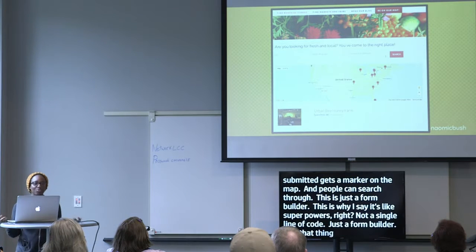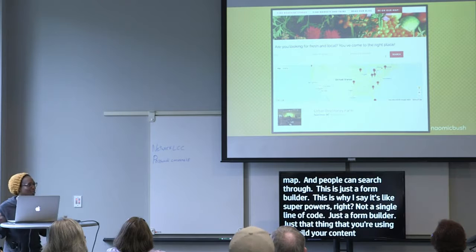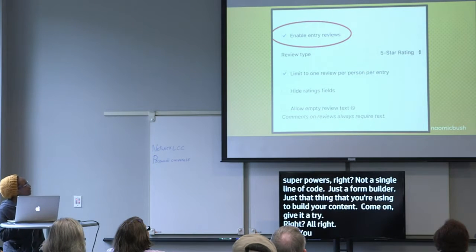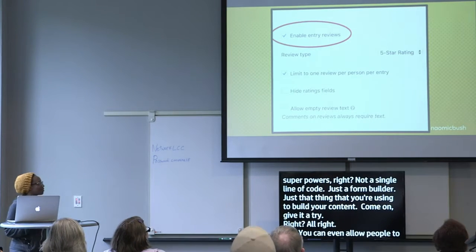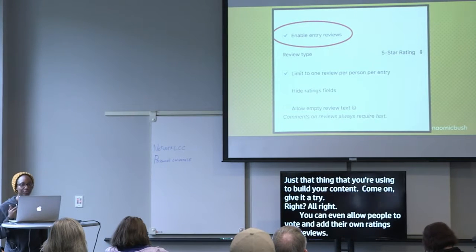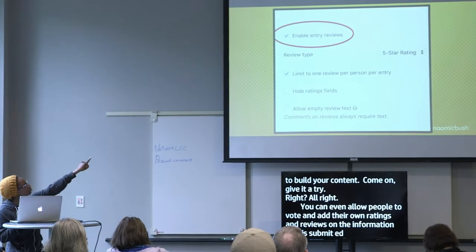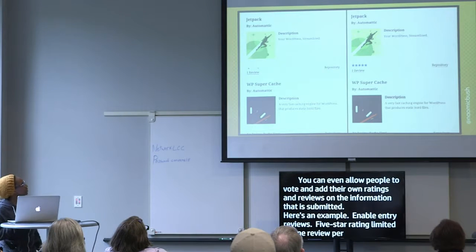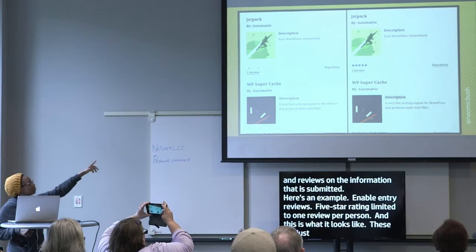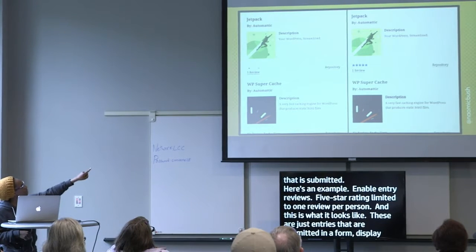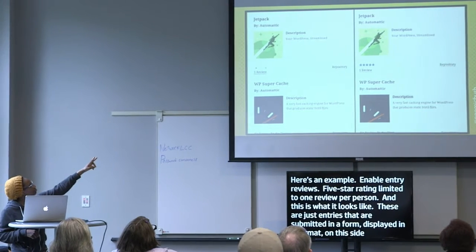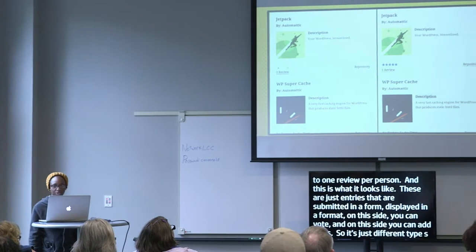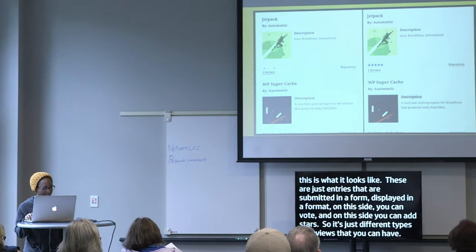Just that thing you're using to build your contact form — give it a job, hire it, give it a promotion. You can even allow people to vote and add their own ratings and reviews on submitted information. For example: enable entry reviews, five-star rating limited to one review per person. These are just entries submitted in a form, displayed in a format — and on this side you can vote, on this side you can add stars.